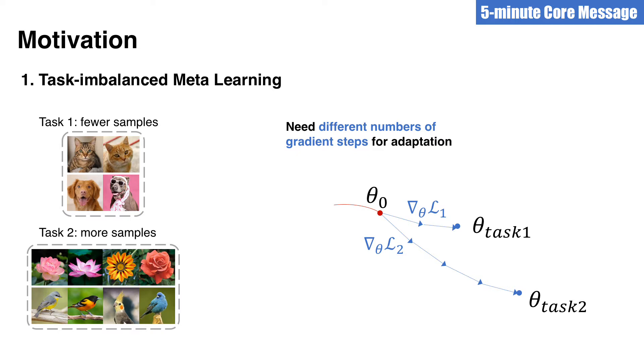Here we present our motivation. In meta-learning, MAML uses gradient descent steps to adapt a common initialization to new tasks. However, depending on the similarity of the new task to the old tasks, or in a more realistic task-imbalanced setting, the number of gradient steps for each task should be different. For example, here task 1 has fewer samples than task 2, then it may require fewer adaptation steps to avoid overfitting. And task 2 may need more steps for better accuracy.